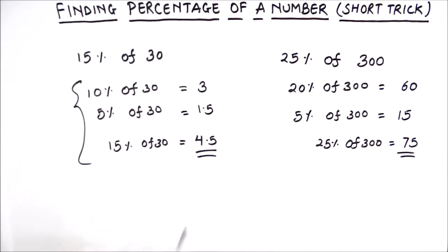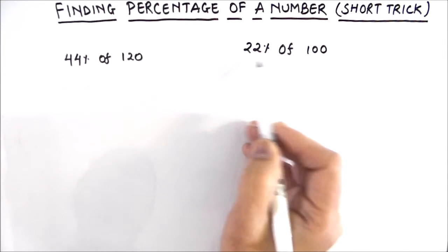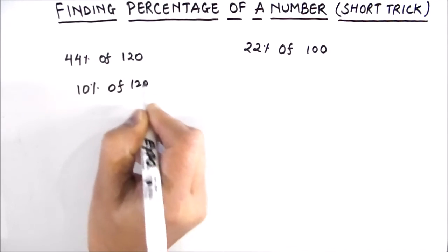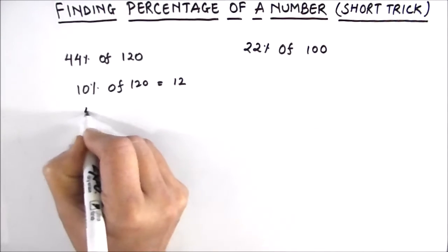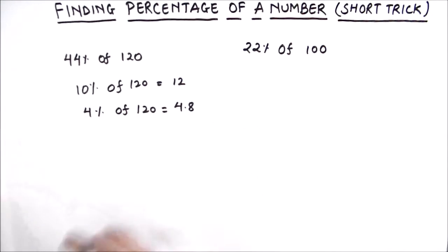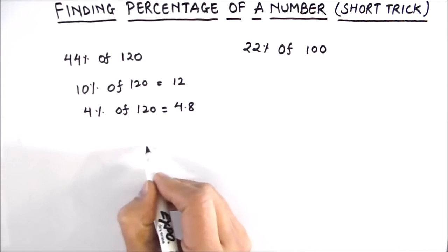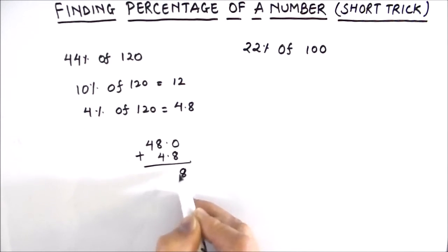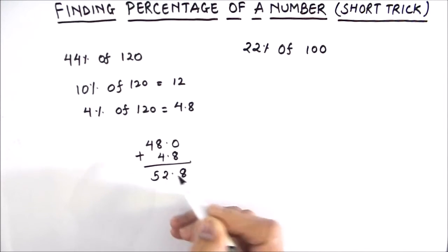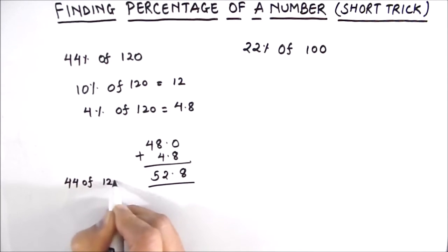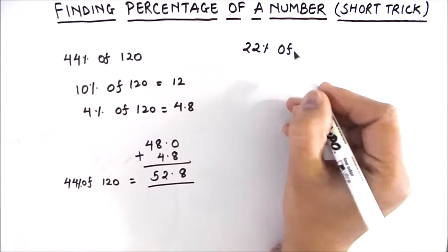Let's solve a few more examples using the short trick. Let's calculate 44 percent of 120 and 22 percent of 150. For 44 percent, we first find 10 percent of 120, which is 12. Then we find 4 percent of 120, which is 4.8. For 40 percent, we add 12 four times, giving 48. For 44 percent, we add 4.8 to get 52.8. So 44 percent of 120 is 52.8.